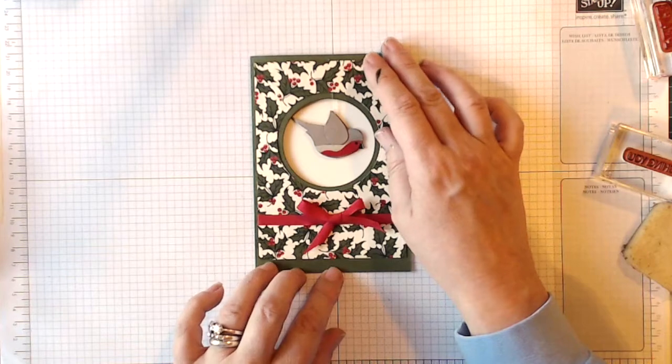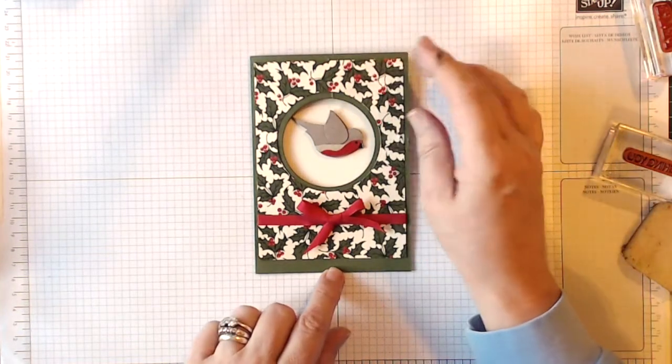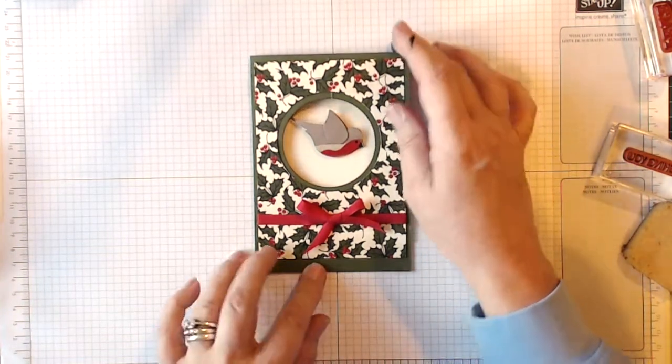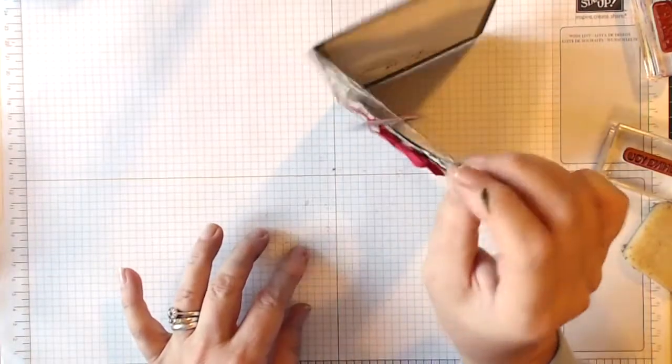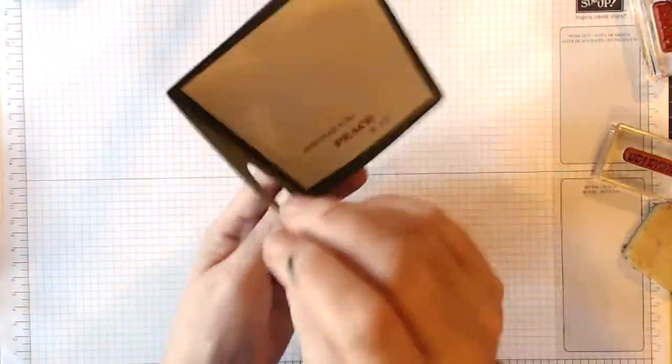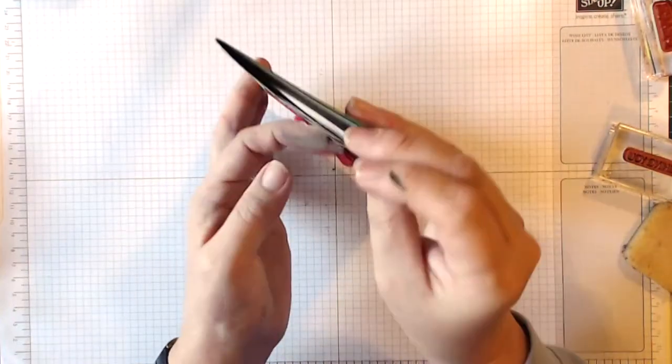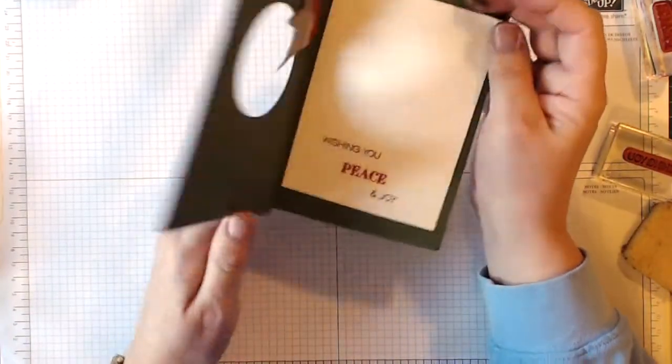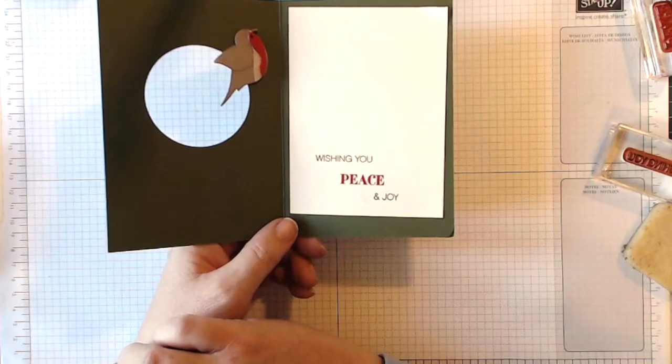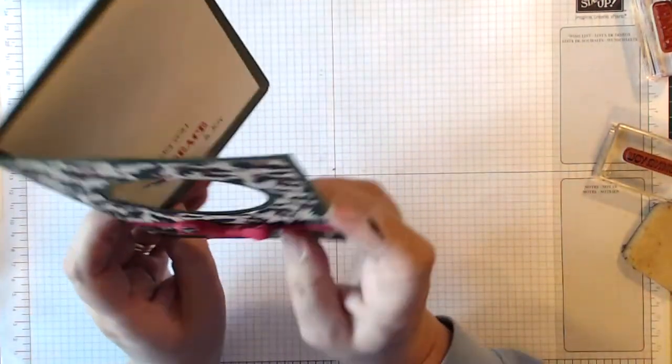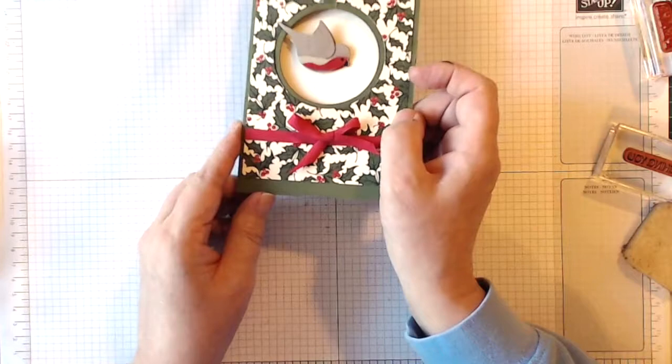Hi everyone, it's Karen here from tuppencecolor.co.uk. Thank you for joining me again today. Today's project is this Robin Dangler card. He does kind of fly around, hard to show on the camera, but he is free flying. When you open up inside you've got a message saying 'wishing you peace and joy.' Very simple and straightforward to do, so stick with me and I'll show you how I made it.